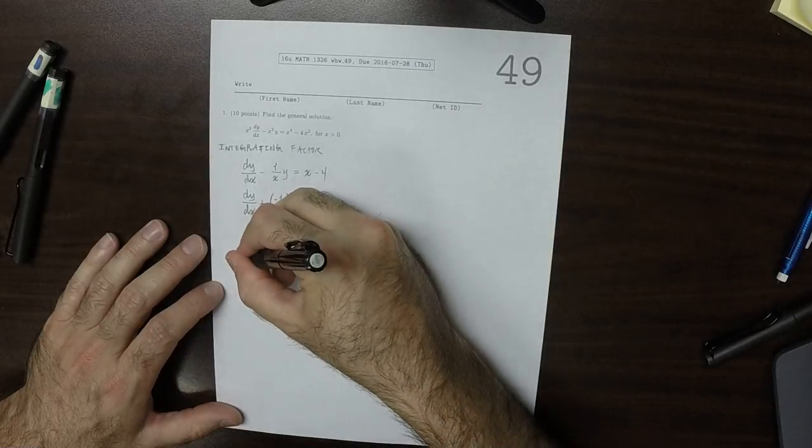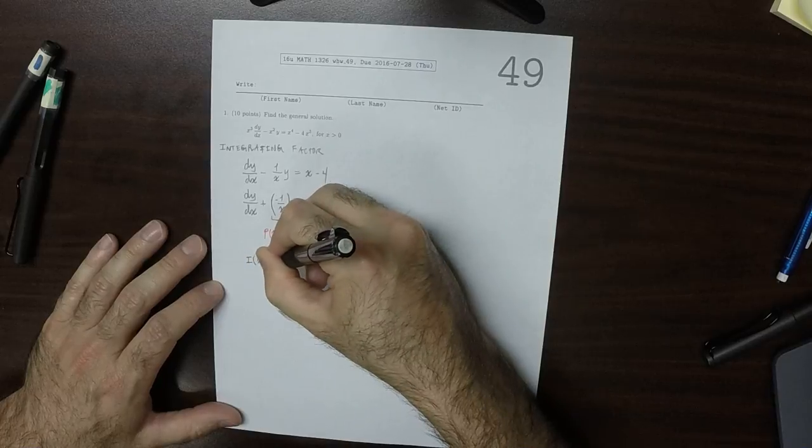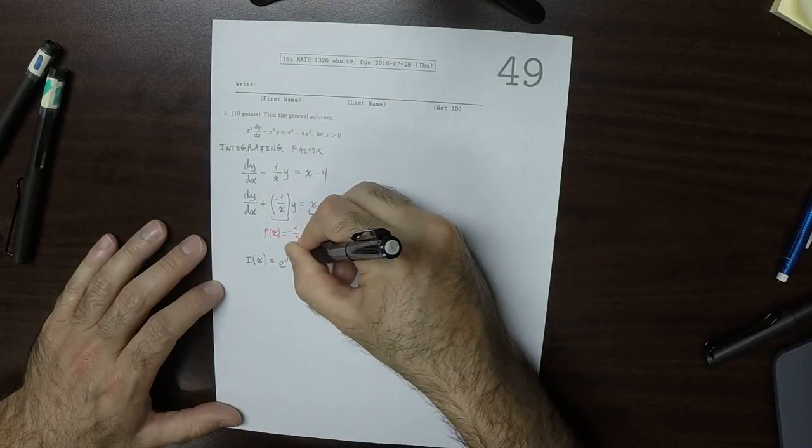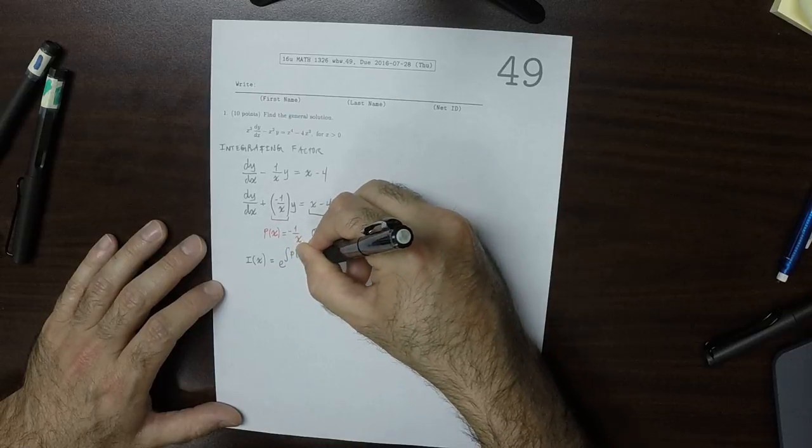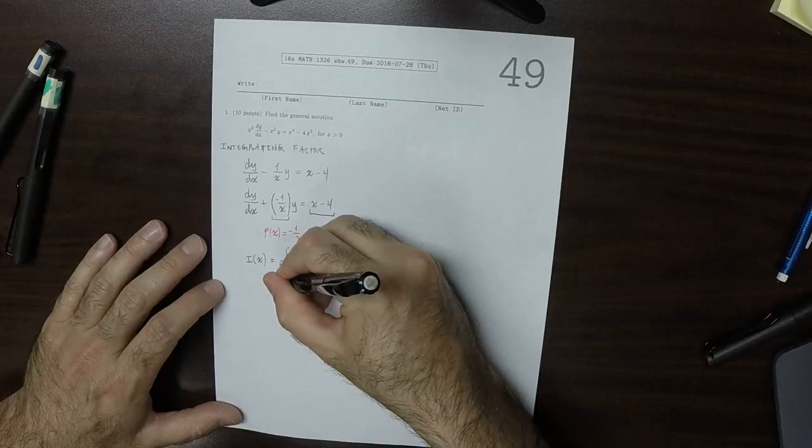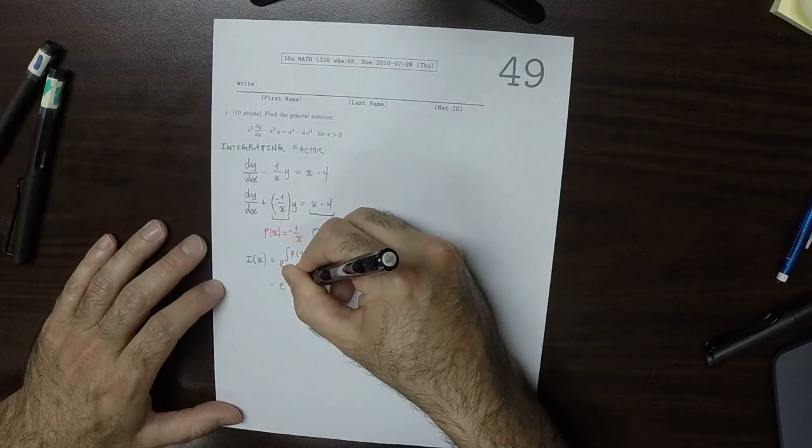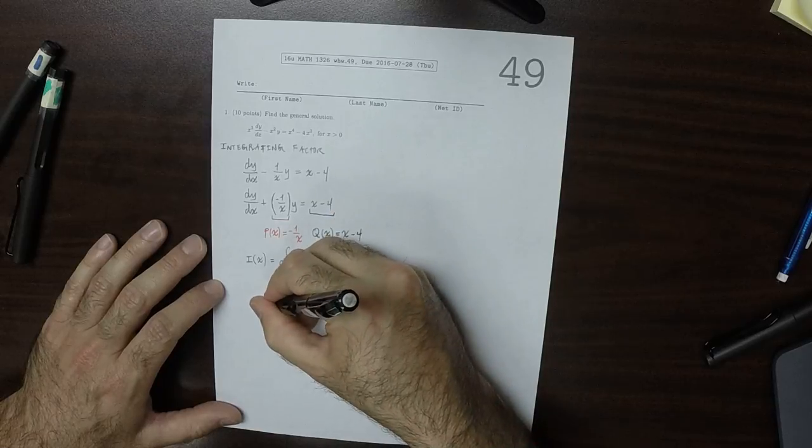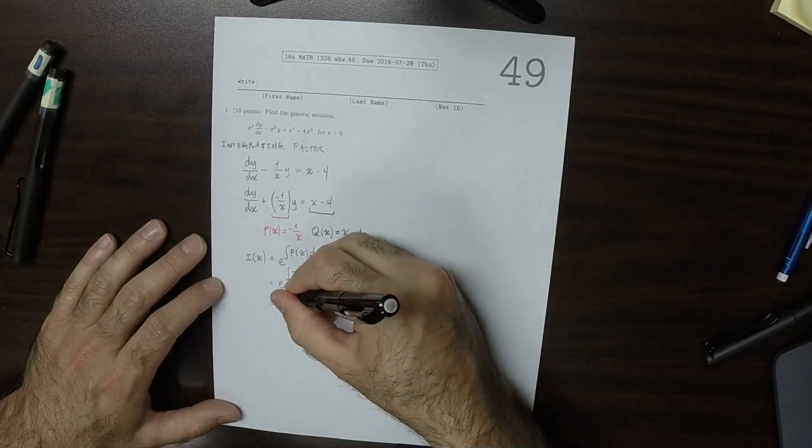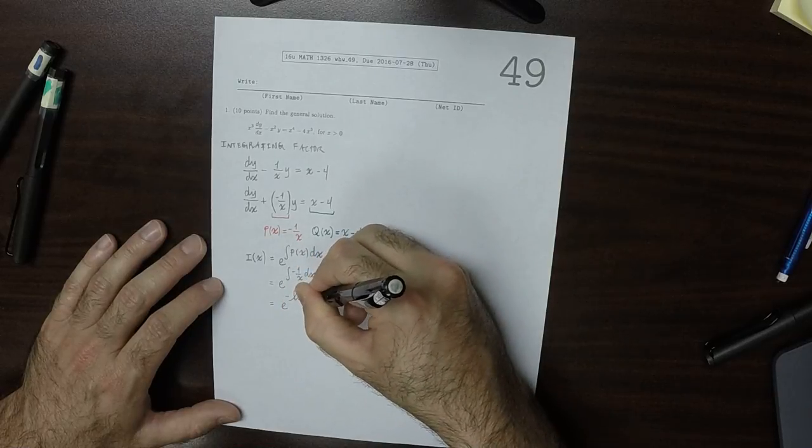So the integrating factor, i of x, is the exponential of the antiderivative of p of x. So on this particular exercise, that's the exponential of the antiderivative of negative 1 over x. So that is the exponential of the negative logarithm of the absolute value of x.